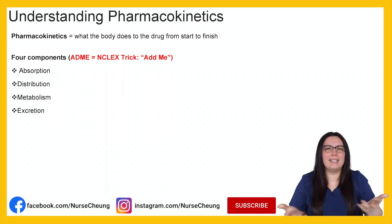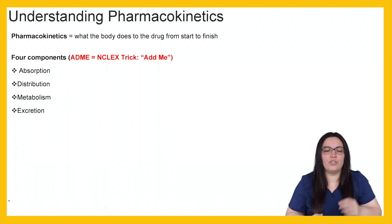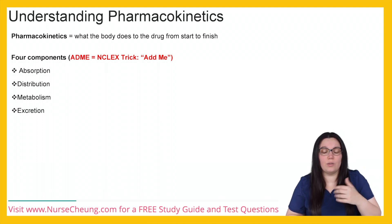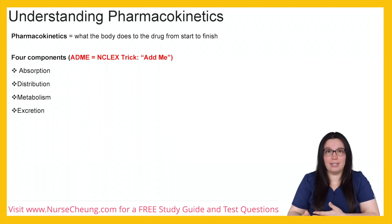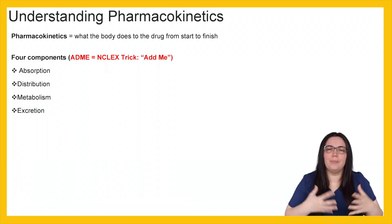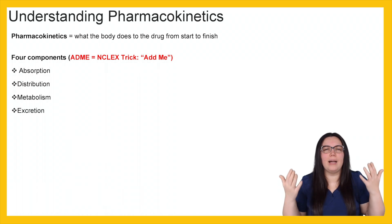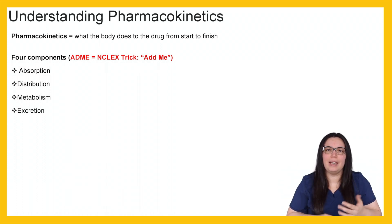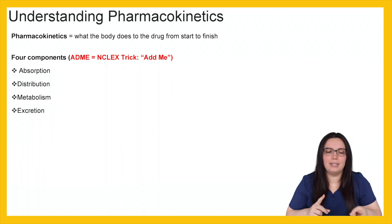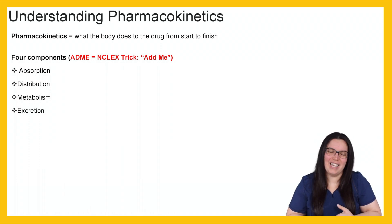So pharmacokinetics — what exactly does that mean? It's what the body does to the drug that we ingest, or is injected, from start to finish. There are really four big components, and when it comes to NCLEX, think about ADME — A-D-M-E. So we have absorption, distribution, metabolism, and excretion. Let's break down what these mean.